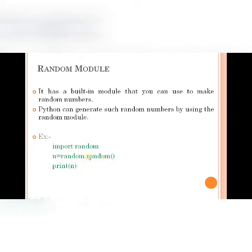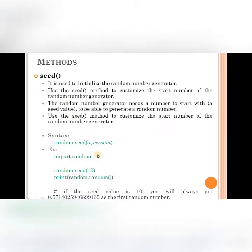We can select a random number and print it. You can choose a random method. The methods available include: seed and random. First of all, there is seed. It is used to initialize the random number generator. When we use the seed method, we initialize the random numbers. The seed method is used to customize the start number of the random number generator.